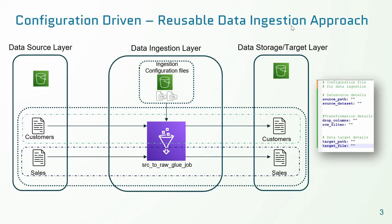Let us look at an approach for creating the reusable data engine pipeline. In this example we have two files — customers and sales — coming from the source system. They are CSV in nature and basic transformations need to be applied, like dropping some columns and filtering records based on business criteria, and they need to be loaded into target Parquet files. What we can do is create a single Glue ETL job which will accept a configuration file.